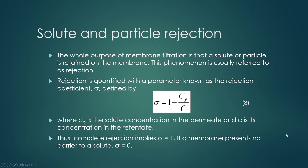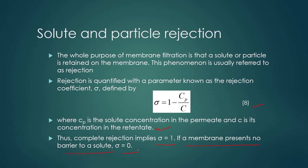An important parameter for assessing membrane performance is the rejection coefficient (σ), defined as: σ = 1 − (Cp/C), where Cp is the solute concentration in the permeate and C is the concentration in the retentate (feed side). Complete rejection implies σ = 1, meaning Cp = 0 (no solute in the permeate). If the membrane presents no barrier to solute, then σ = 0.